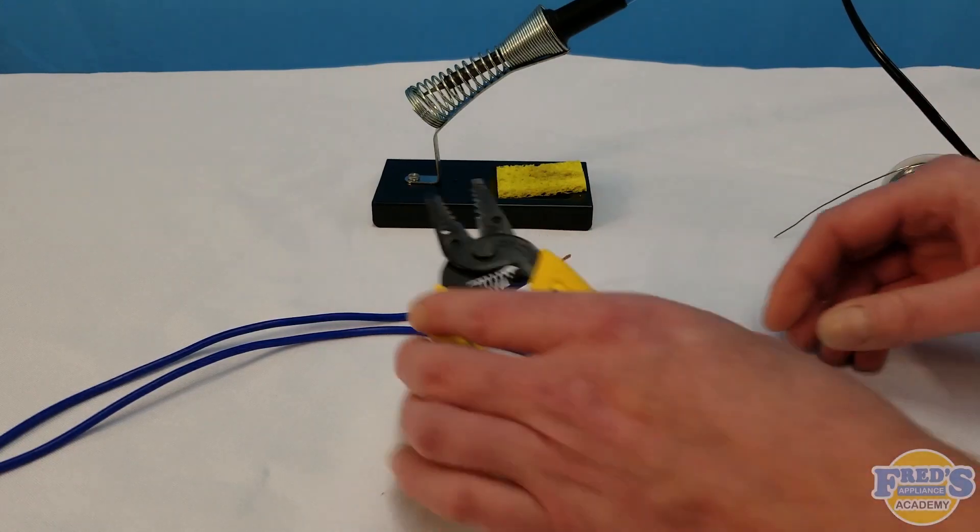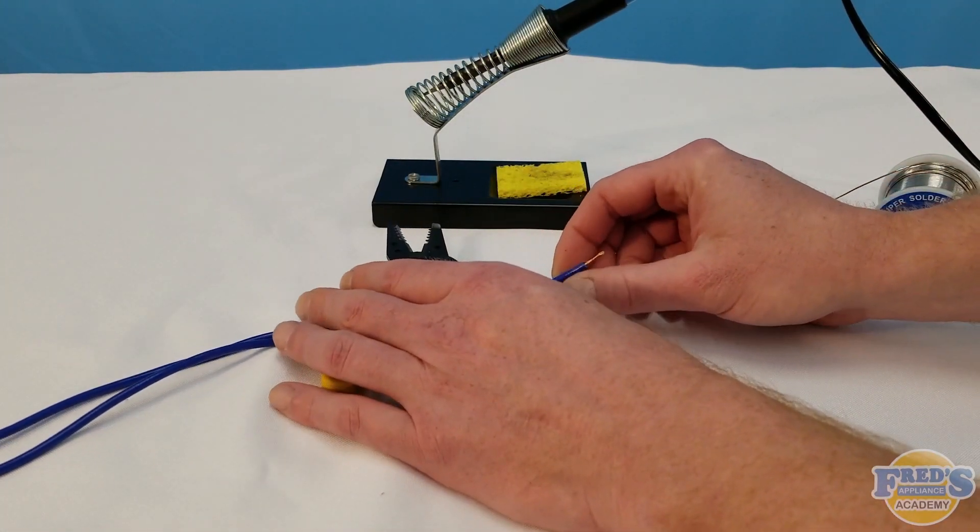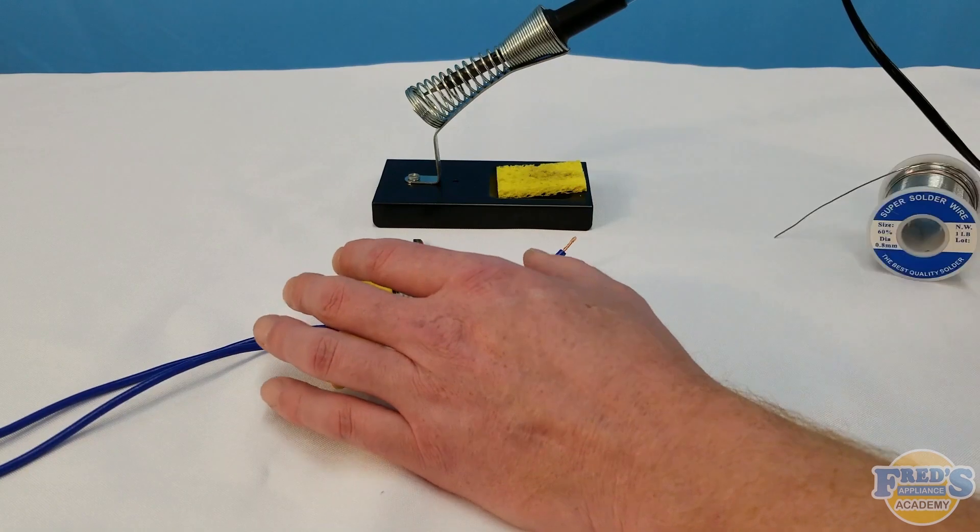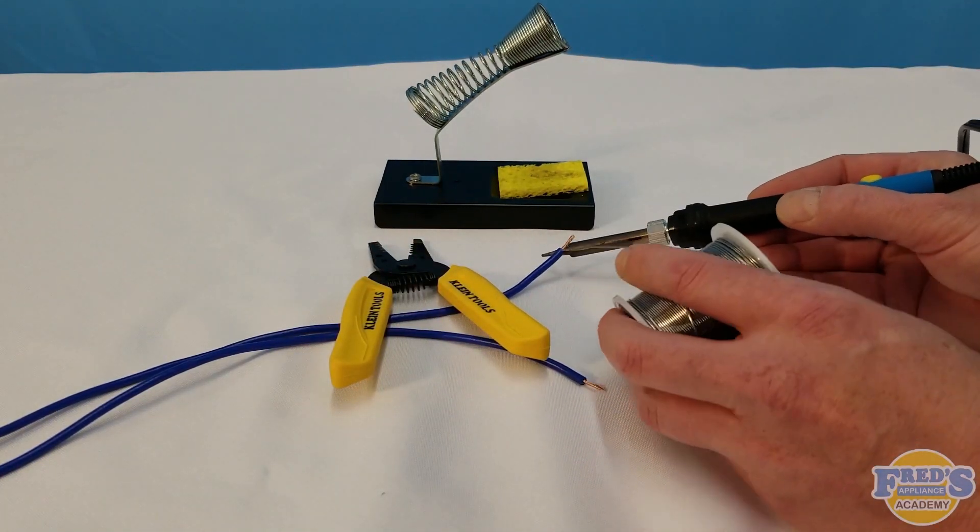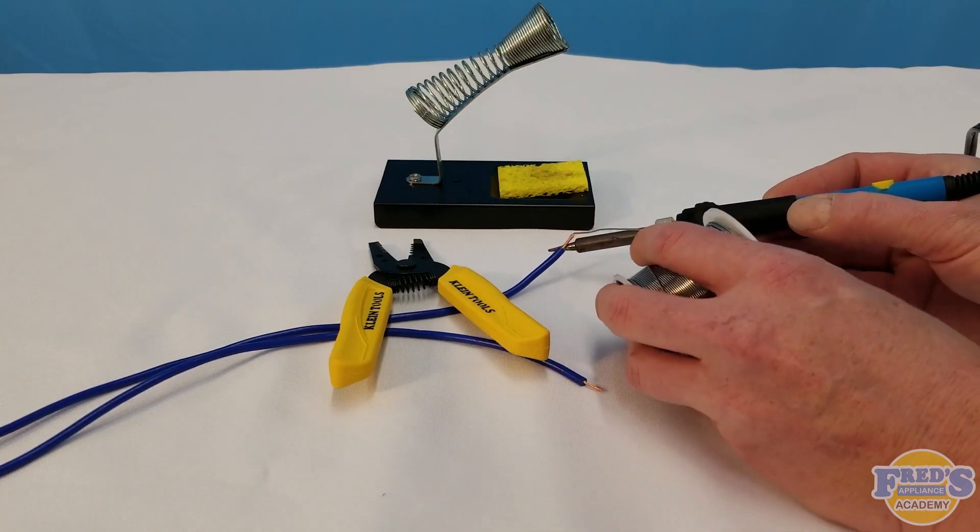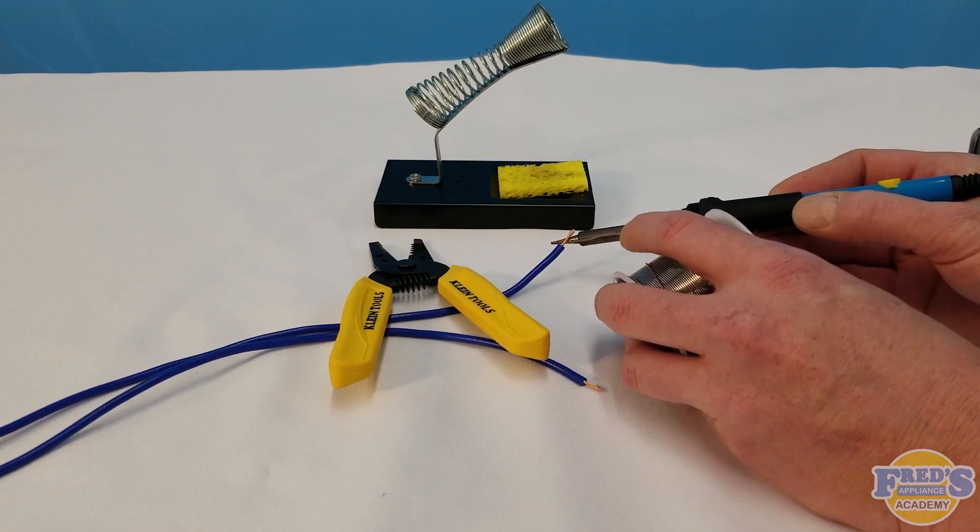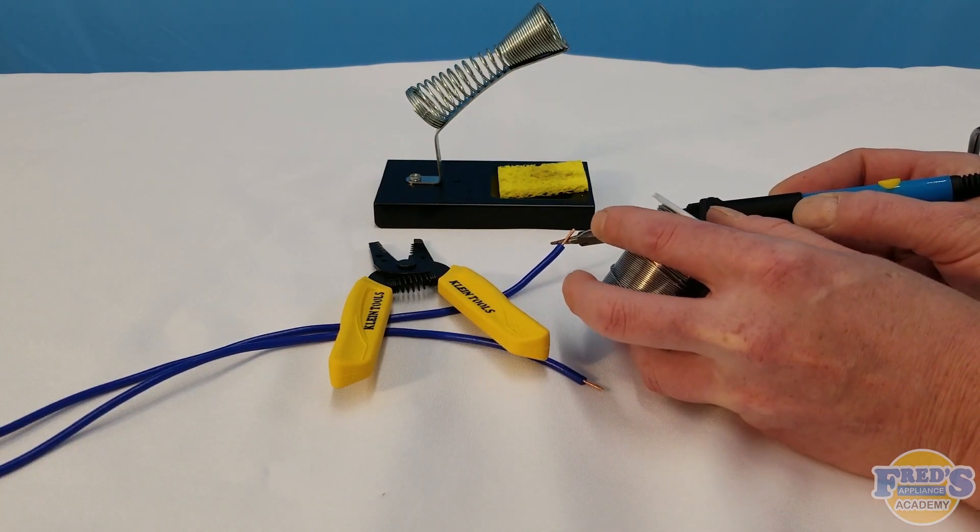Next, using some rosin core solder and our soldering gun, we're going to pre-tin the tips of our copper wiring. You want to make sure that your soldering gun is up to temperature before this process and it usually should be set at about 350 to 450 degrees.